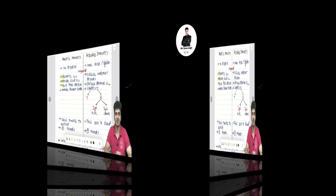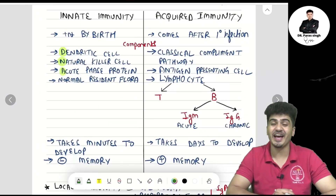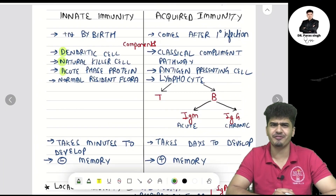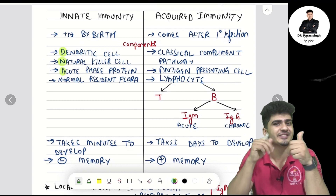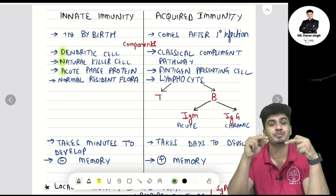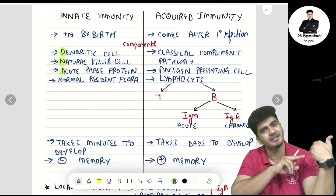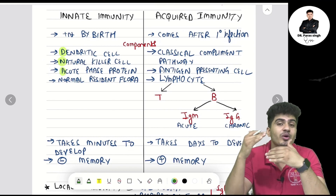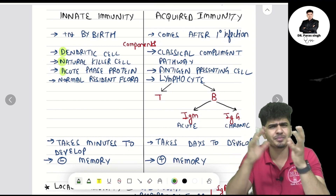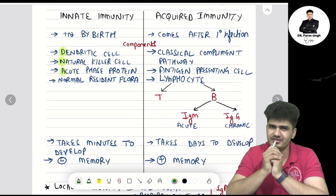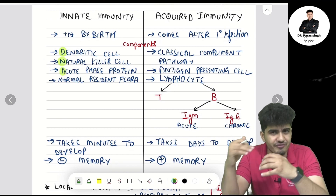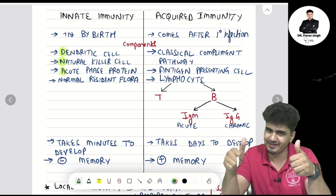We are going to talk about innate and acquired immunity. Innate means something which is present by birth. Acquired means something which is acquired after birth, or more specifically, acquired after the primary infection.